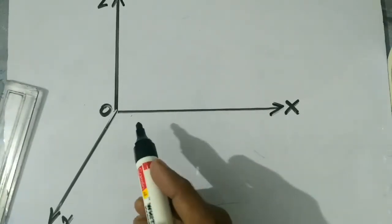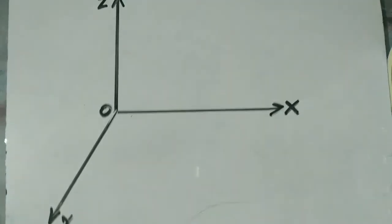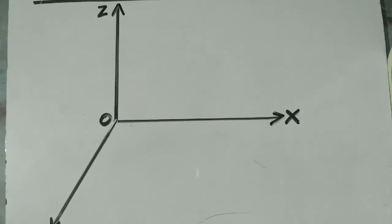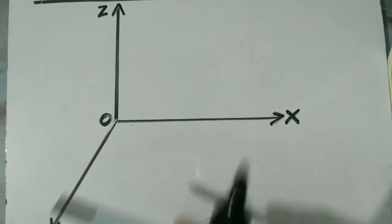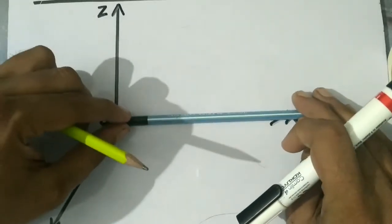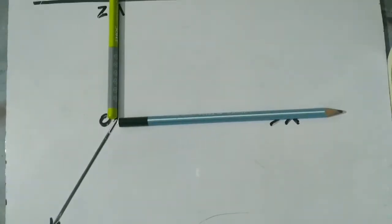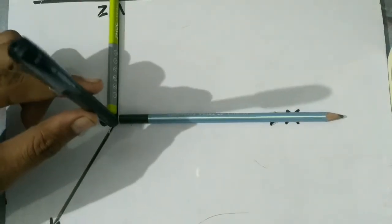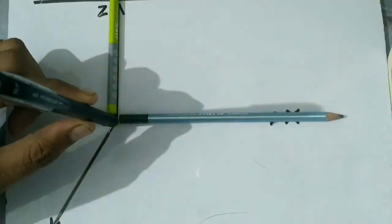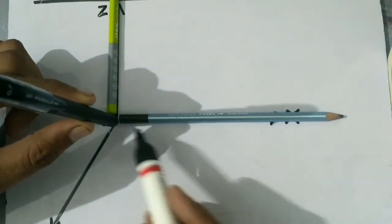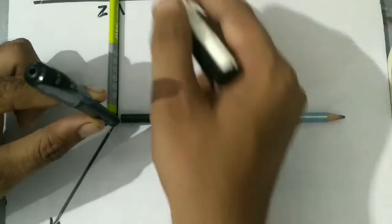These are three mutually perpendicular straight lines. The angle between OX and OY may seem to be an obtuse angle because it is impossible to draw three mutually perpendicular straight lines on a plane. So with the help of these three pencils, we are trying to understand the correct concept of three mutually perpendicular straight lines. This is x-axis, this is y-axis, and that is z-axis.